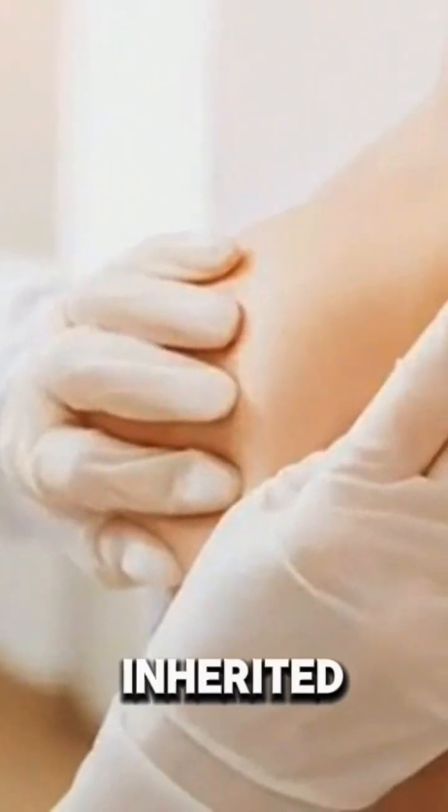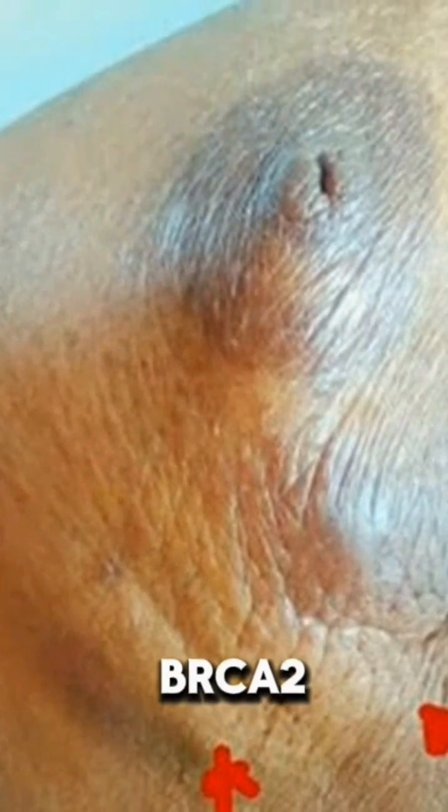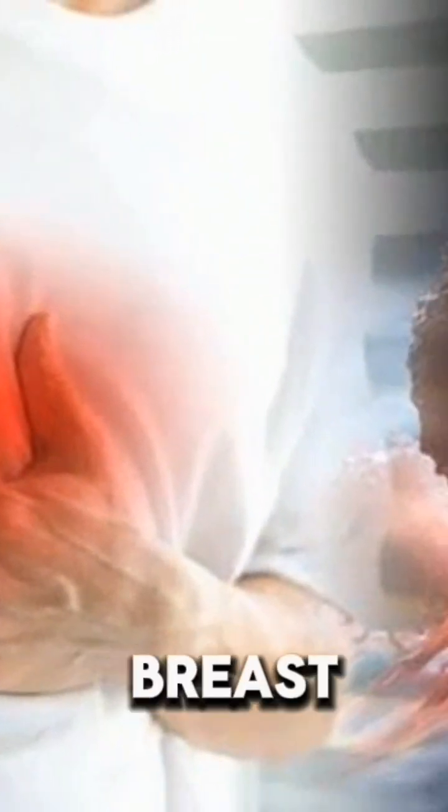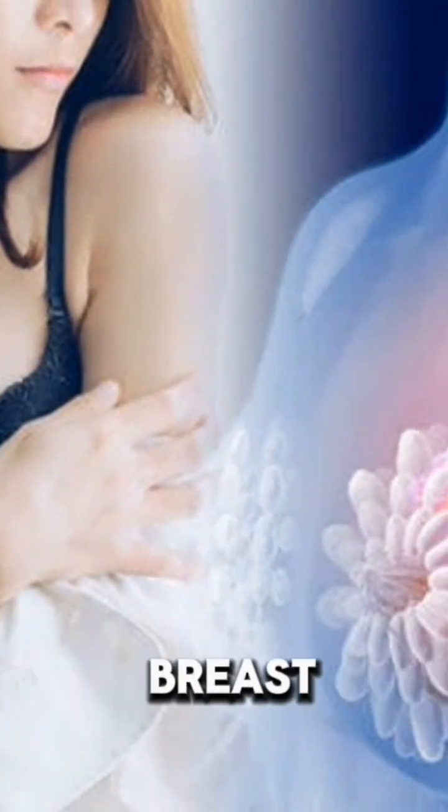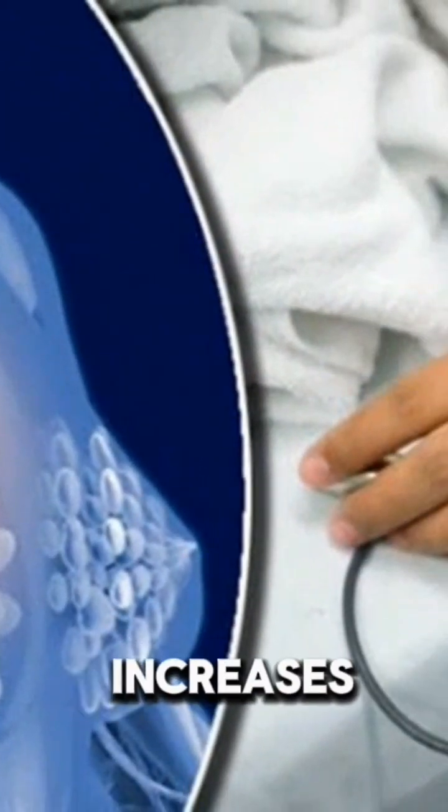These include genetic mutations - inherited mutations such as in the BRCA1 and BRCA2 genes increase the risk of breast cancer. Family history: having close relatives with breast or ovarian cancer increases risk.